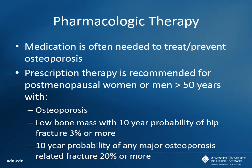Medication will be needed to either treat established osteoporosis or prevent it. Typically you'll find postmenopausal women or men greater than 50 who start treatment if they already have osteoporosis, or if they have a high risk of fracture within the next 10 years — 3% or more risk of a hip fracture, or 20% or more 10-year probability of a major osteoporosis-related fracture. These are the cut points where you'd say let's go ahead and start therapy.